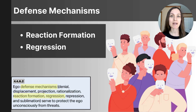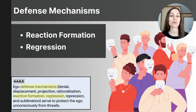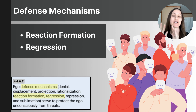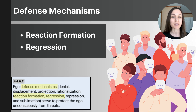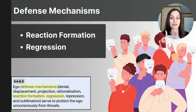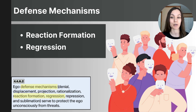Reaction formation occurs when someone acts in a way that is opposite to their true feelings. For example, if someone strongly dislikes their coworker but instead acts overly friendly and complimentary toward them, it could be a way of unconsciously covering up their true feelings. This defense mechanism helps reduce the anxiety or guilt they feel about their negative emotions by portraying the opposite emotion.